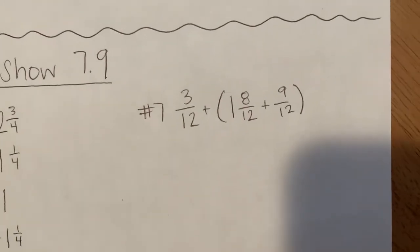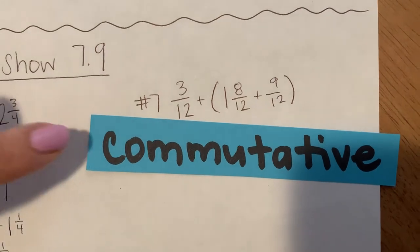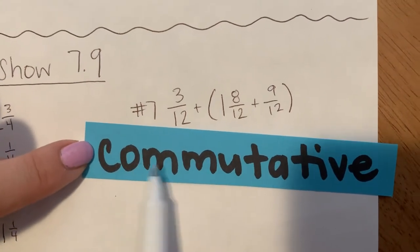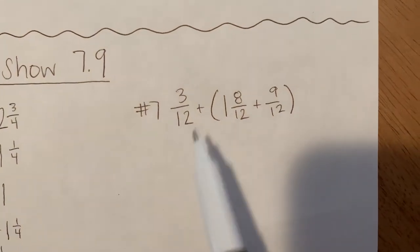So again, the first thing I want to think about is, do I want to order these numbers in any specific way that would help me when I'm adding them together? So do I want to change the order or use the commutative property?